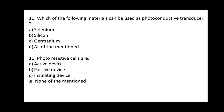Question 10: Which of the following materials can be used as a photo conductive transducer? Options: A) Psyllium, B) Silicon, C) Germanium, D) All of the mentioned. The correct option is D — all of these materials are used in photo conductive transducers.